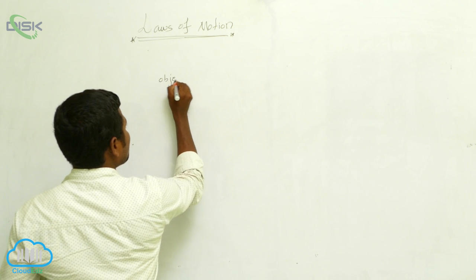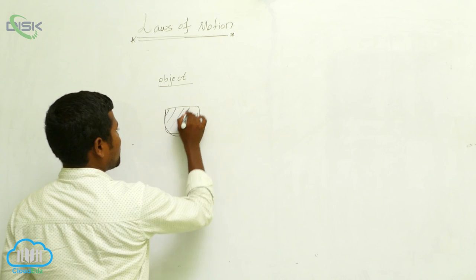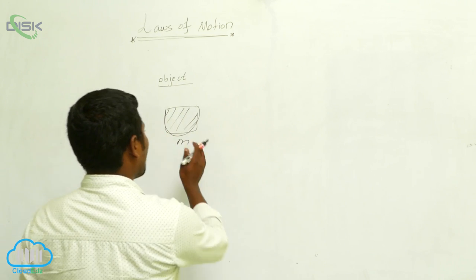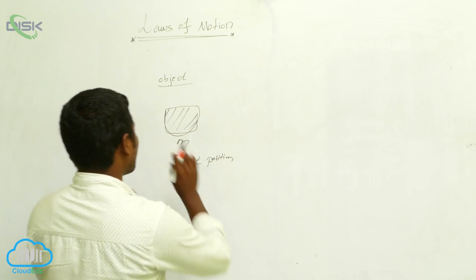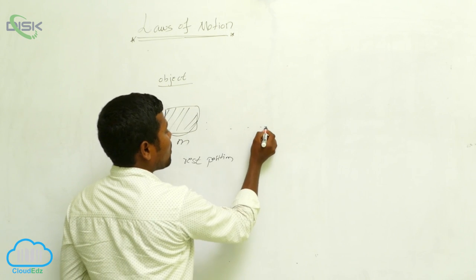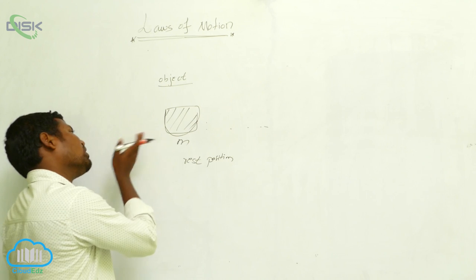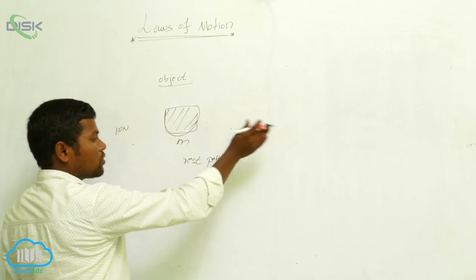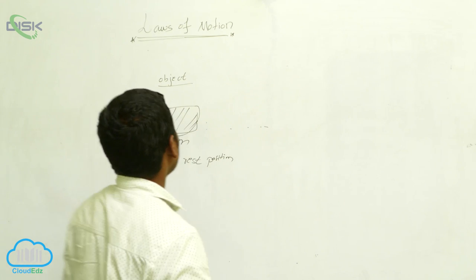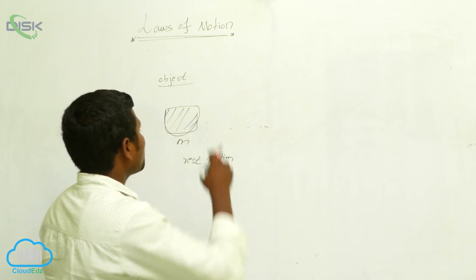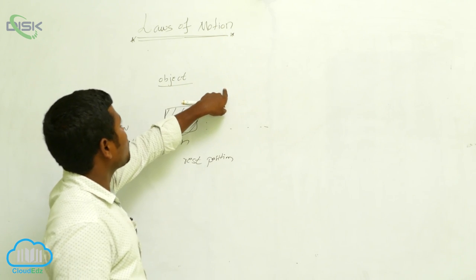First we have to consider the object. The object definitely has some mass. Now suppose this object is at rest. If I apply some force on it, it starts moving from one place to another. How far it moves depends on how much force I apply — 10 N, 20 N, or 30 N. When we apply external force and it moves, we say that object is in motion.